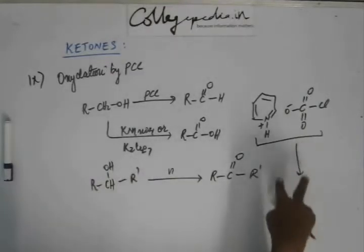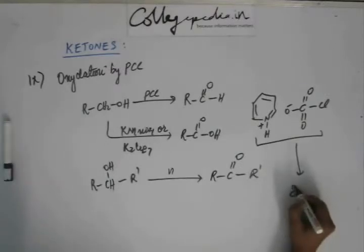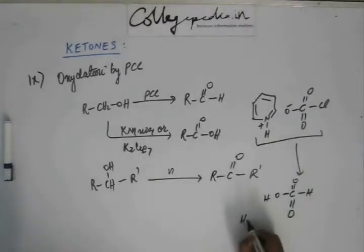When it is reduced, it forms dihydrogen chromate, H2CrO3 as one of the product.